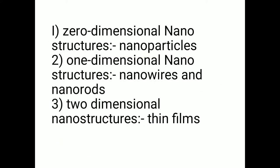Nanomaterials exist as zero-dimensional, one-dimensional, and two-dimensional nanostructures. In a zero-dimensional nanostructure, all three dimensions are in the nanoscale — example: nanoparticles. In a one-dimensional nanostructure, two dimensions are in the nanoscale — examples: nanowires and nanorods. In a two-dimensional nanostructure, one dimension is in the nanoscale — example: thin films. So nanomaterials fall into three categories: 0D, 1D, or 2D structures.